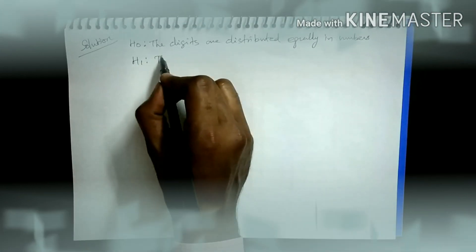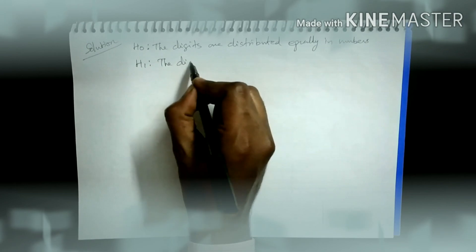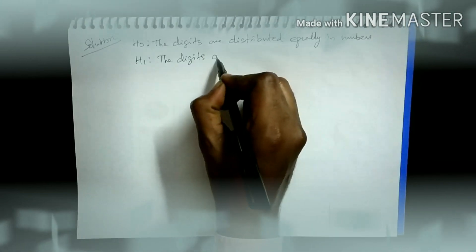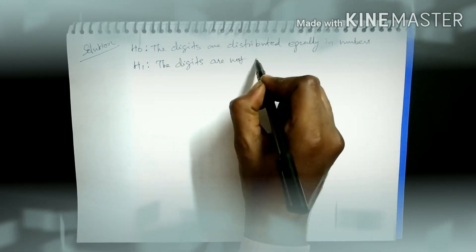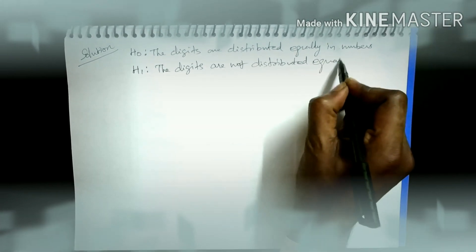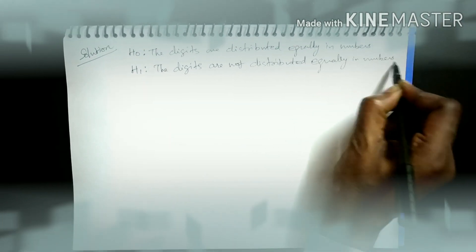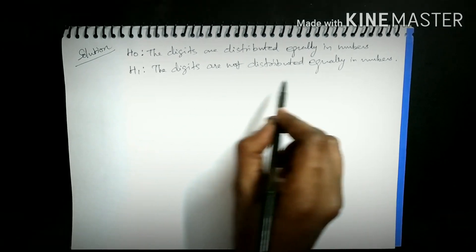Alternative hypothesis is just opposite of this. The digits are not distributed equally. There is a difference.